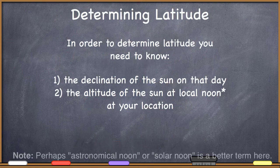You need to know which line of latitude is receiving the direct rays of the sun at noon on any particular day that you're trying to make your determination of latitude. The second thing you need to know is the altitude of the sun at local noon at your location.